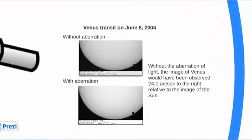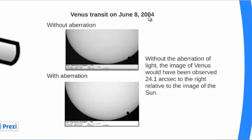Let's look at the situation for Venus. There was a Venus transit on June 8, 2004. Without aberration we would have seen one image; with the effect of aberration we saw something else. The two images are different by an amount of 24.1 arc seconds, which is the combination of the constant aberration of the Sun of 20.4 arc seconds and 3.7 arc seconds for Venus, which is in the opposite direction.